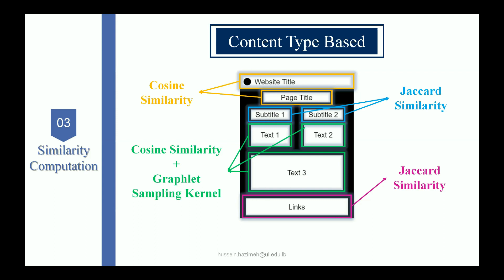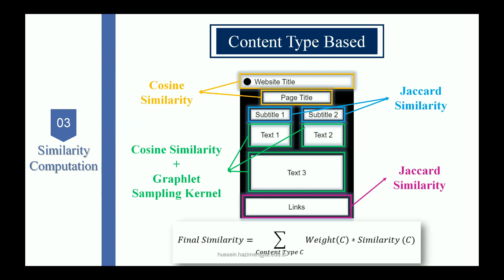For the body text, we also use graph similarity in order to find semantic similarity and extend the previous algorithms to enhance accuracy. The overall similarity algorithms employed in our REDUCE++ method include cosine similarity, Jaccard, and cosine plus a Graphlet Sampling Kernel, which is a graph similarity algorithm. The final similarity score is computed as the product of the weight of each content type multiplied by the similarity result for that specific content, where the largest weight is assigned to the textual body content.